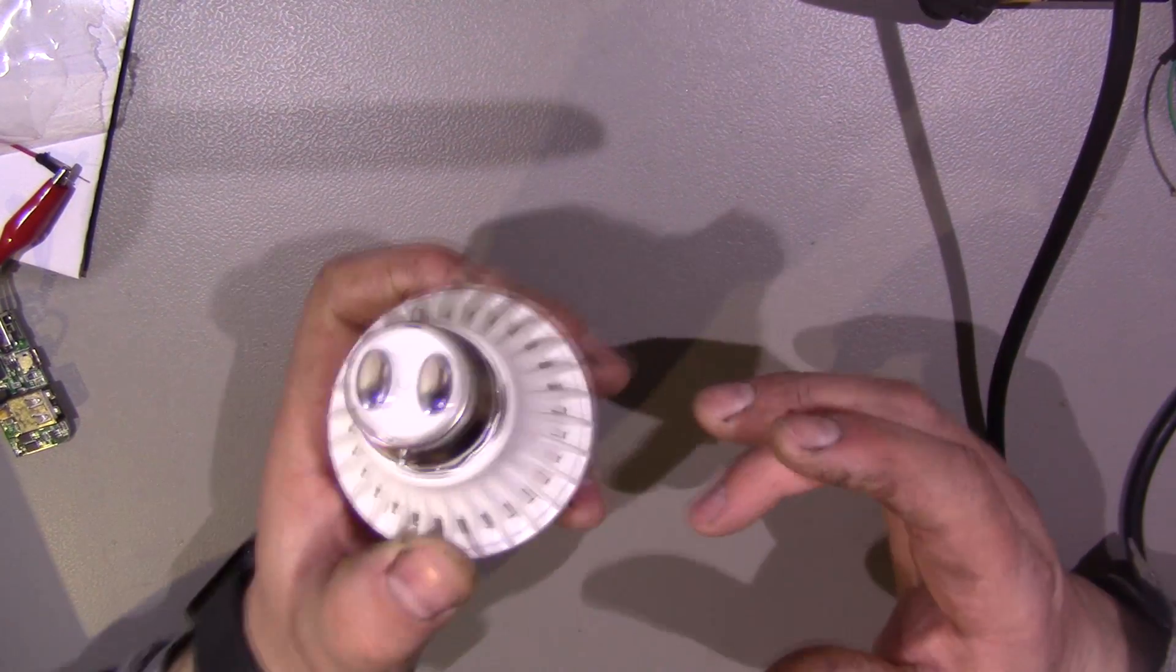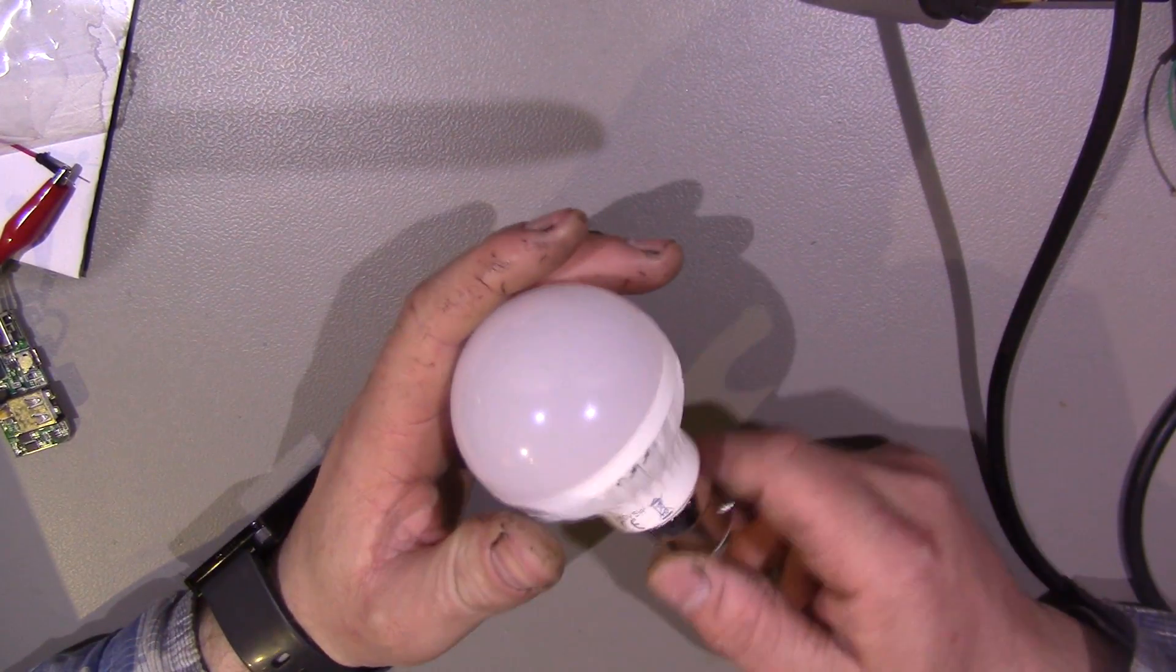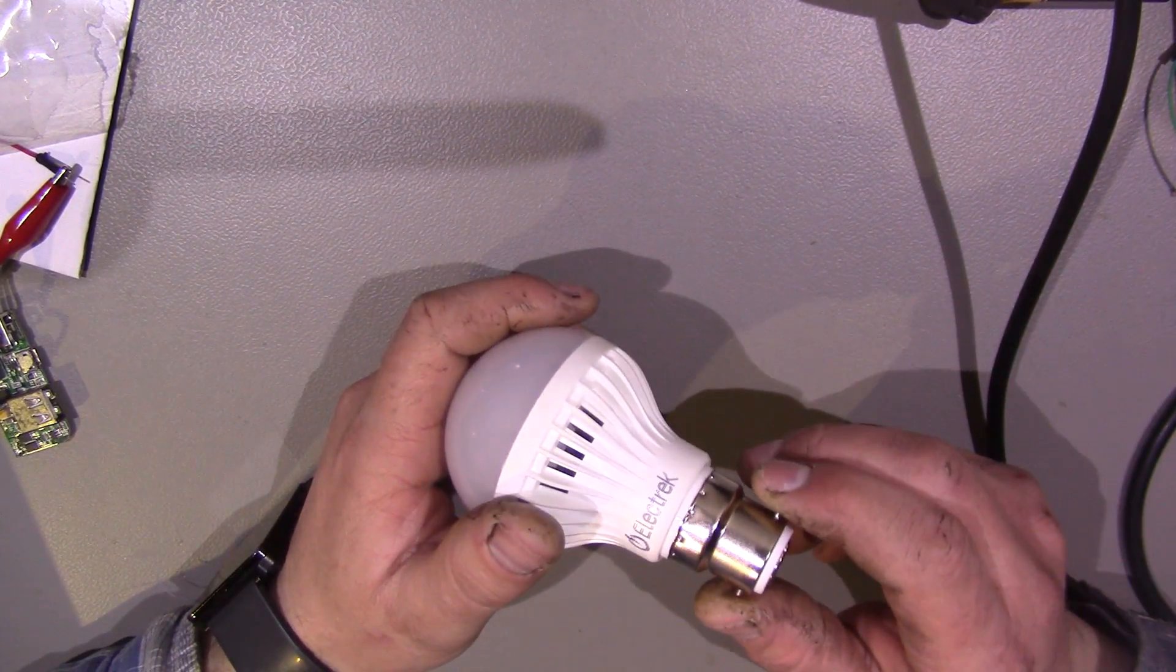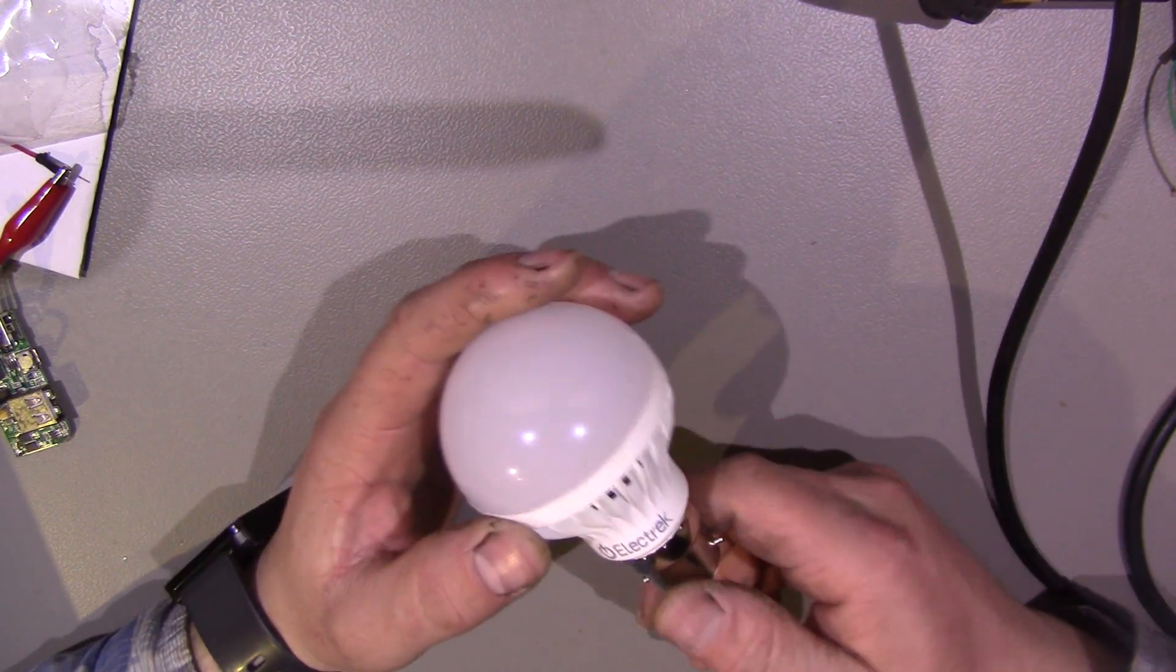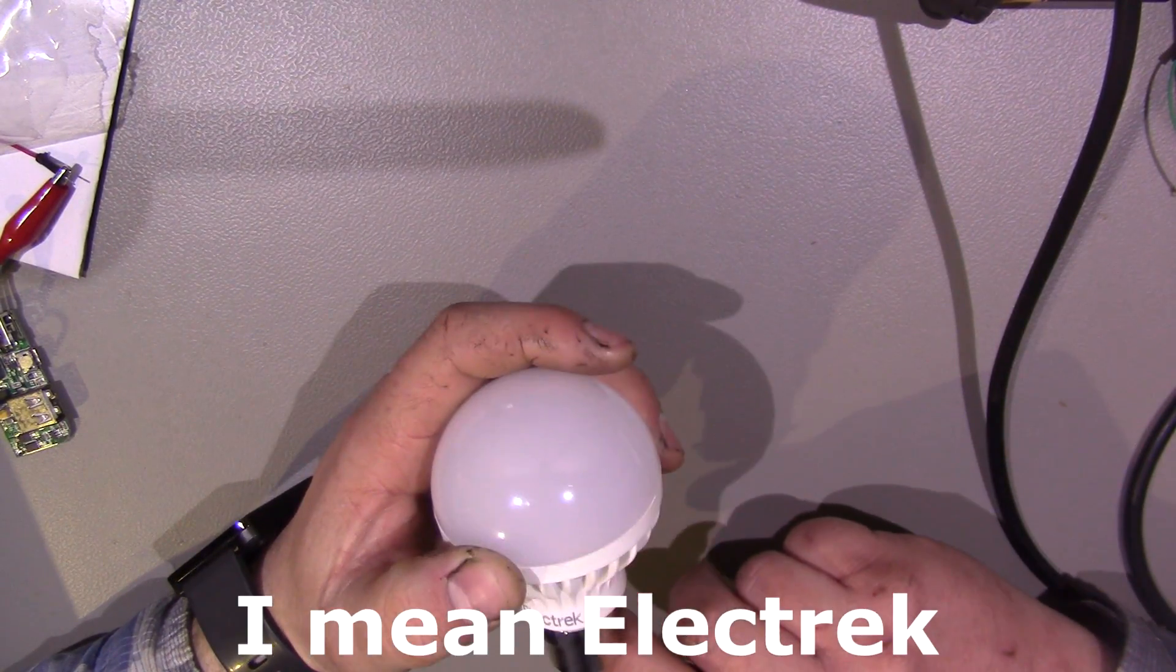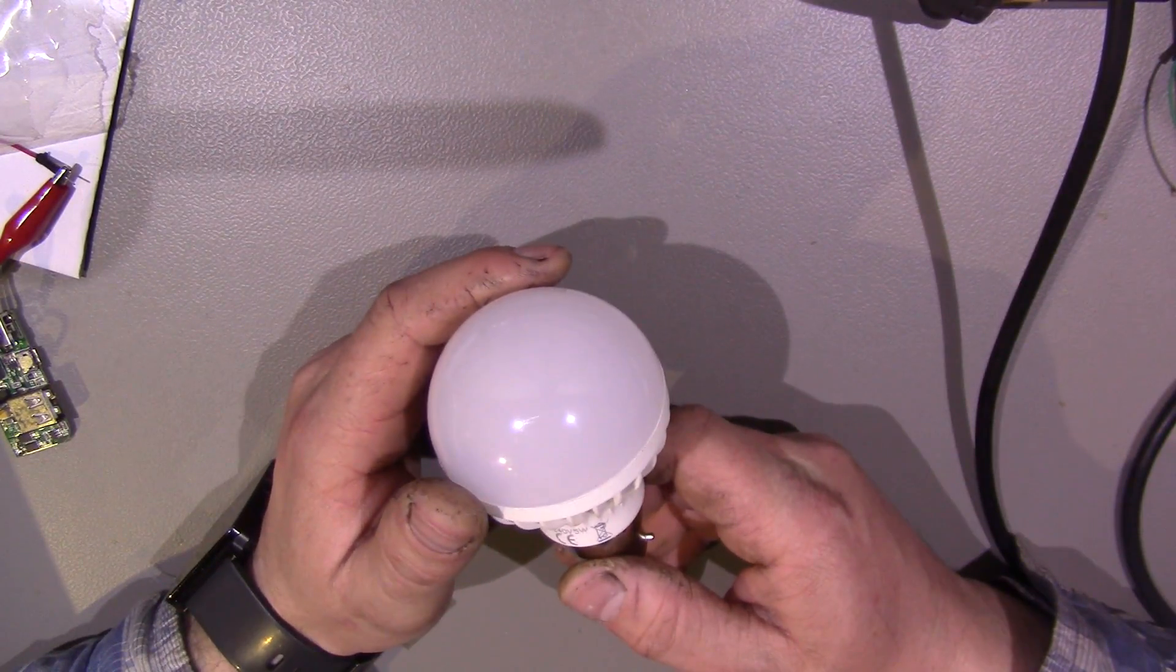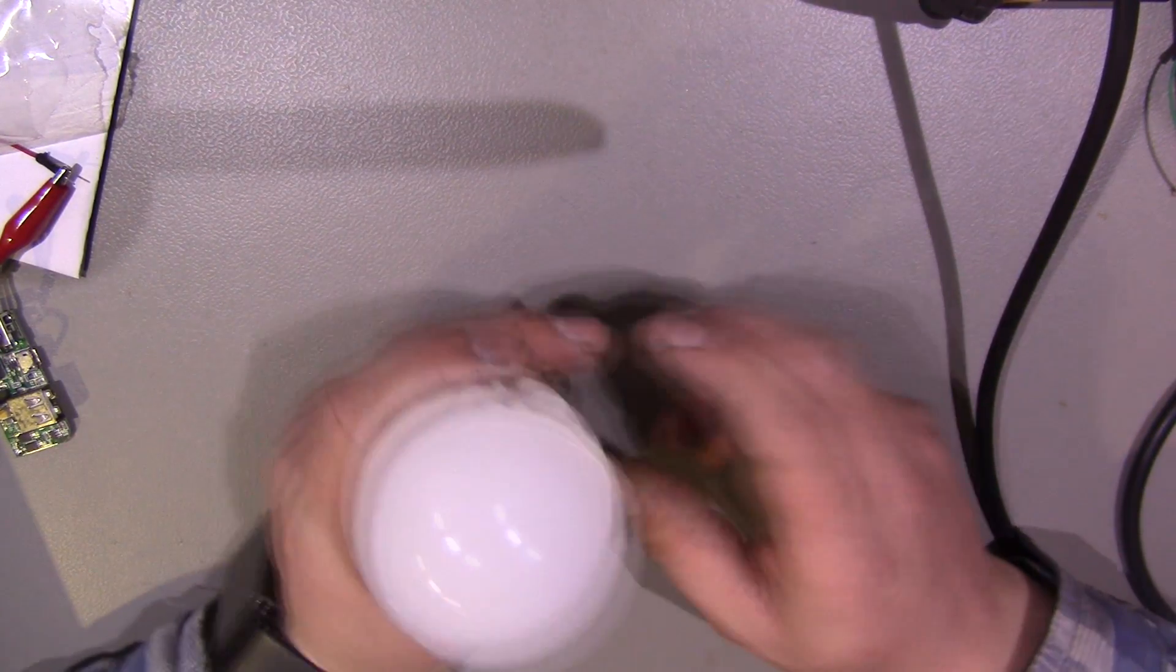Hi, so today I thought we'd have a look at this LED lamp. This is one I bought from Poundland probably about four or five months ago now. We've got the brand Electro Trek on it and it is 240 volts and 5 watts.